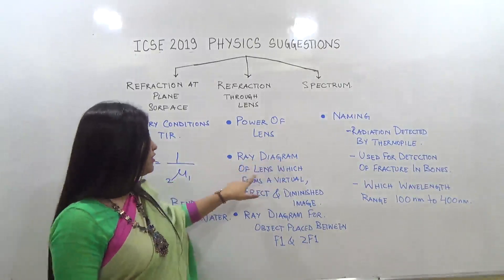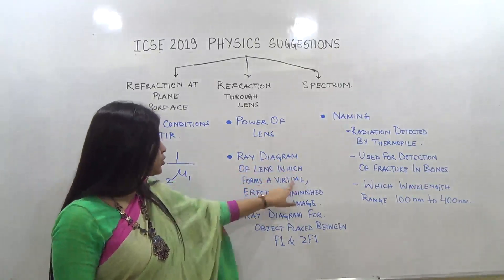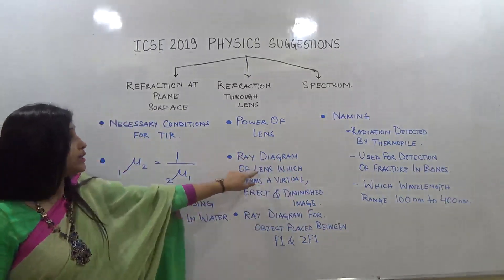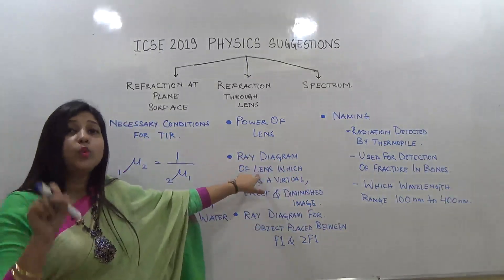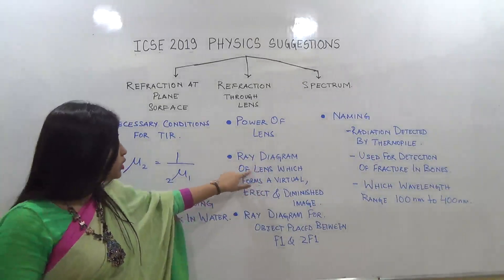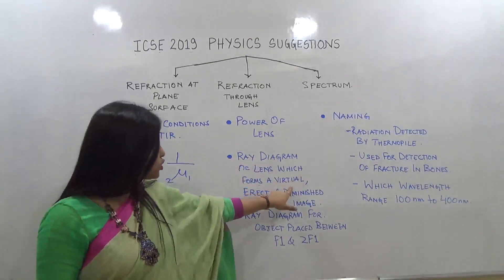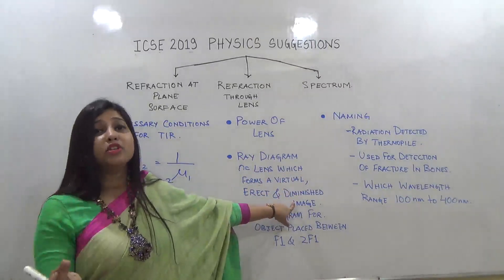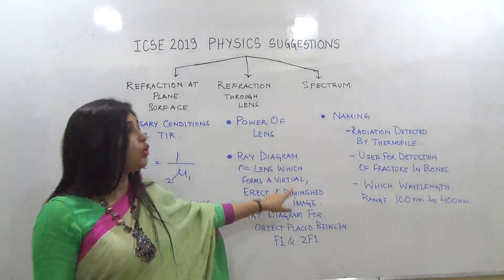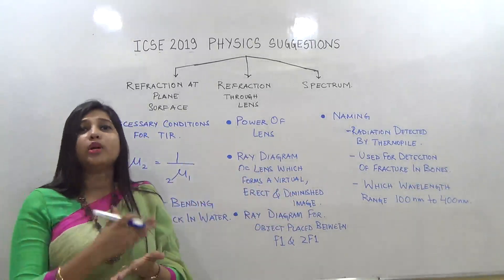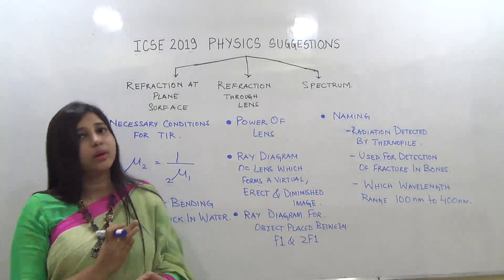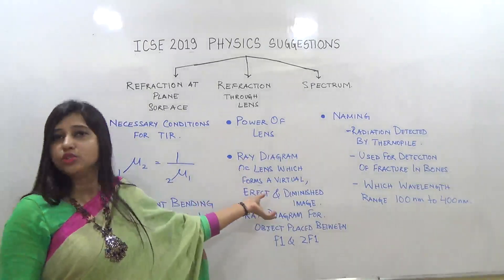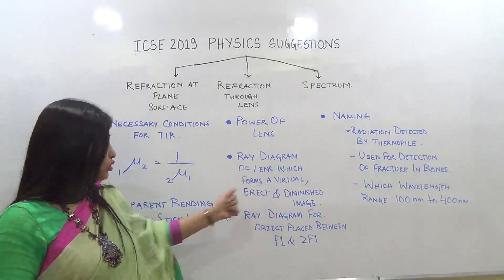Next is a ray diagram of a lens which forms a virtual, erect, and diminished image. They have not mentioned which lens — so you need to identify from the image attributes. Virtual, erect, and diminished belong to concave lens image formation. So: the lens being used is a concave lens, and you need to draw the corresponding ray diagram.